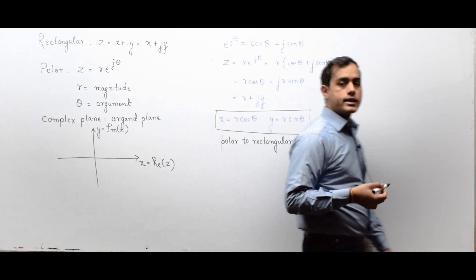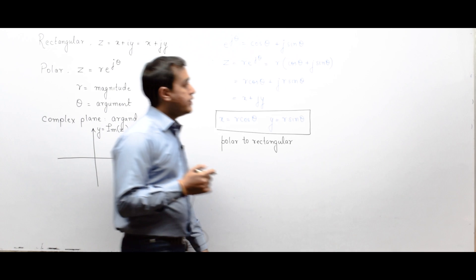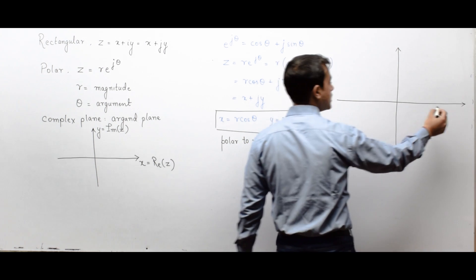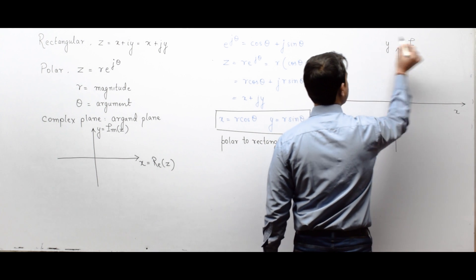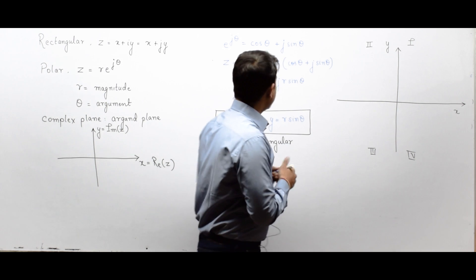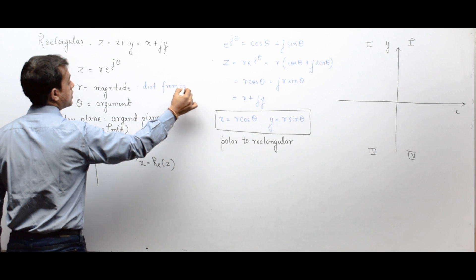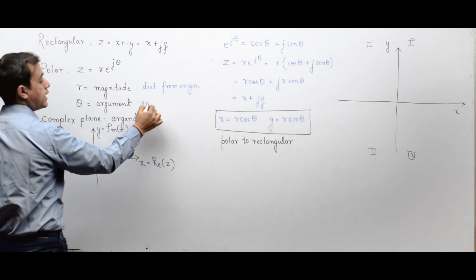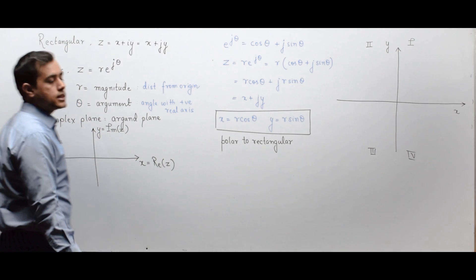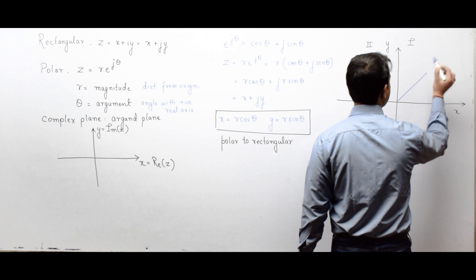When we want to convert from rectangular to polar, we must understand the quadrants. There are four quadrants. Here r represents the distance from the origin, and θ represents the angle with the positive real axis.